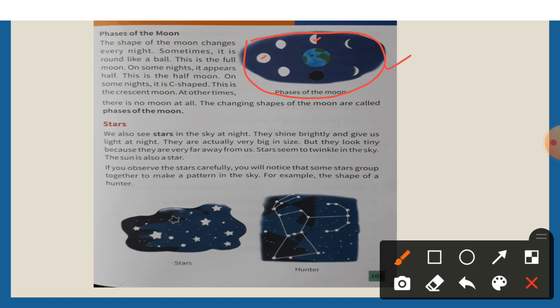On some nights it is crescent-shaped. You can see that it is crescent-shaped. This is the crescent moon.